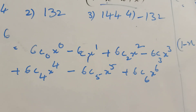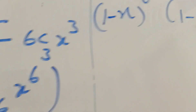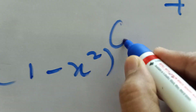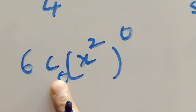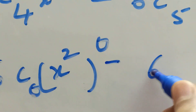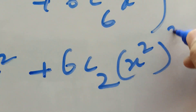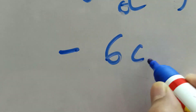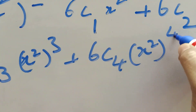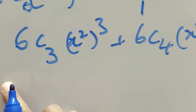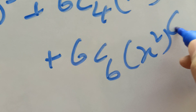Now also expand (1 minus x square) whole power 6: 6C0 (x square)^0 minus 6C1 (x square)^1 plus 6C2 (x square)^2 minus 6C3 (x square)^3 plus 6C4 (x square)^4 minus 6C5 (x square)^5 plus 6C6 (x square)^6.